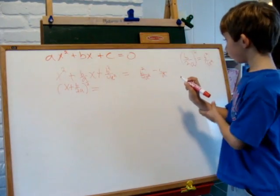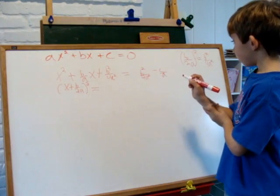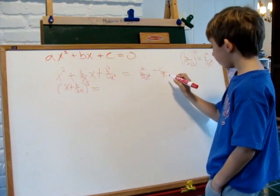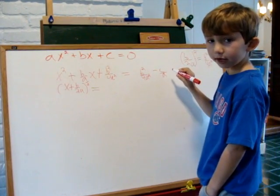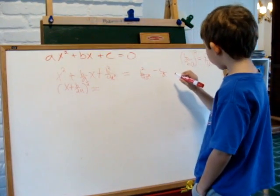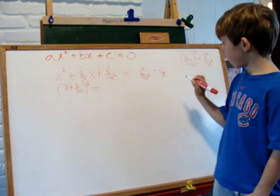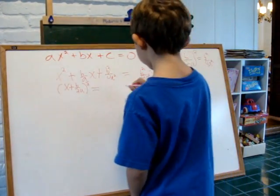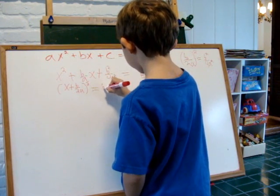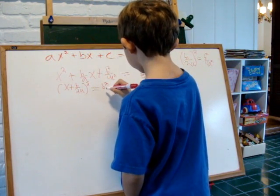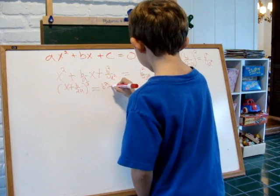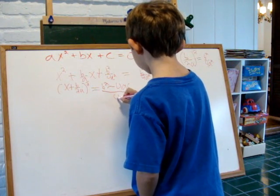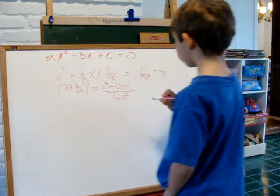Now we look at this side of the equation. To combine it we need common denominators. In order to make common denominators, we multiply top and bottom of negative c over a by 4a over 4a. So we get b squared minus 4ac all over 4a squared.